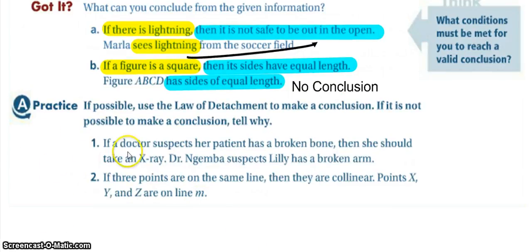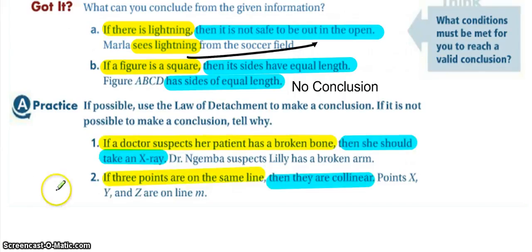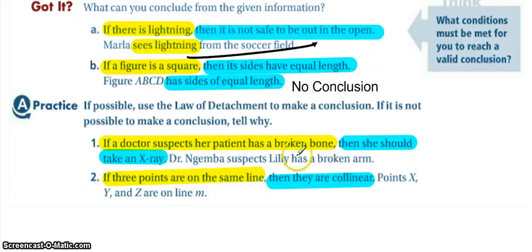Go ahead and check out the extra practice problems. Think about: is the hypothesis being satisfied or is the conclusion being satisfied? If the hypothesis is satisfied, then the conclusion will have to happen. For situation one, color-coded in yellow: if the doctor suspects a broken arm, then she should take an x-ray. The doctor suspects Lily has a broken arm — that satisfies the hypothesis — so we know the conclusion will happen.